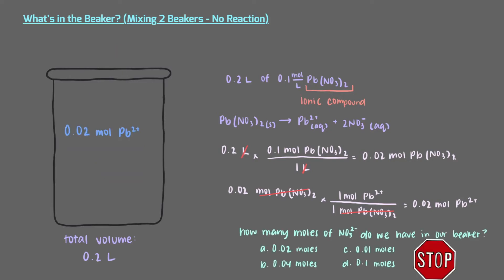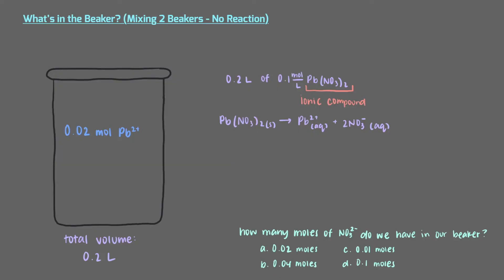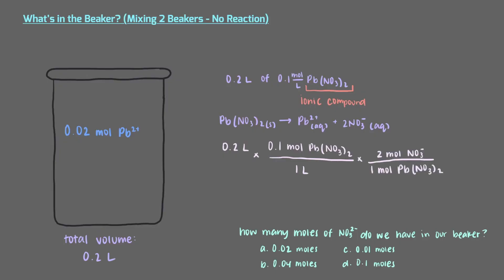How many moles of nitrate do we have in our beaker? The concentration is 0.1 moles of lead nitrate per liter, and we have 0.2 liters of solution. By looking at our net ionic equation for dissolving lead nitrate, we see a coefficient of 2 in front of nitrate, which means we need 2 moles of nitrate for every 1 mole of lead nitrate that dissolves. Adding this conversion factor and multiplying through, we get 0.04 moles of nitrate.